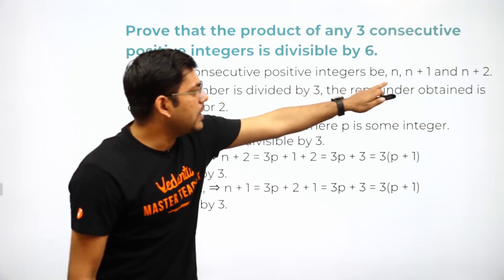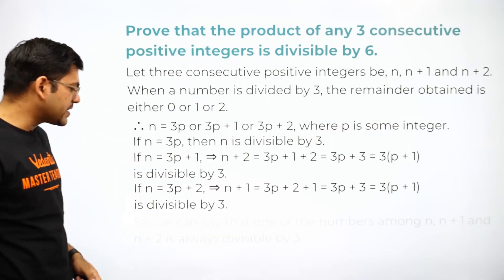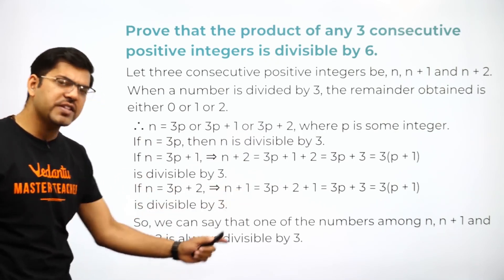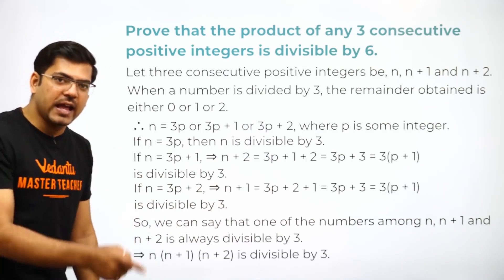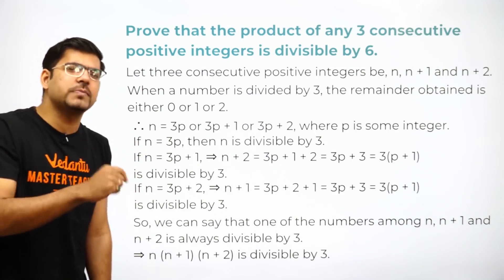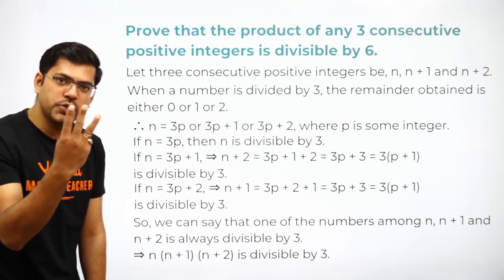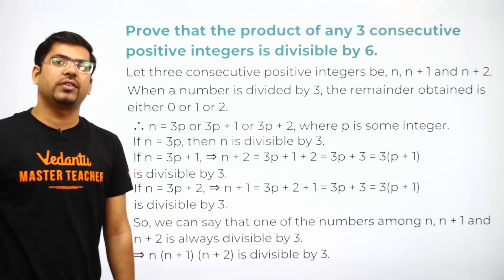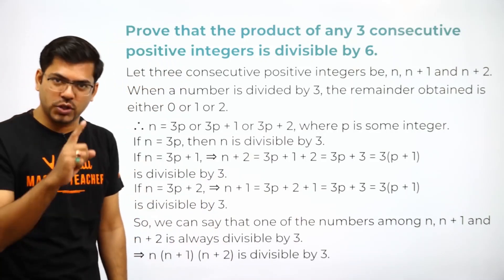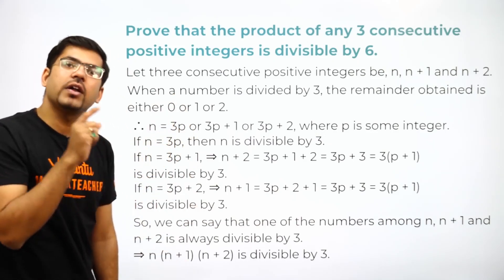So in each and every case, either n, n+1, or n+2 is divisible by 3. Therefore, in all cases, one of the numbers among n, n+1, and n+2 is always divisible by 3, and hence their product n(n+1)(n+2) will always be divisible by 3. Since 6 has two prime factors 2 and 3, we now need to show divisibility by 2 as well.